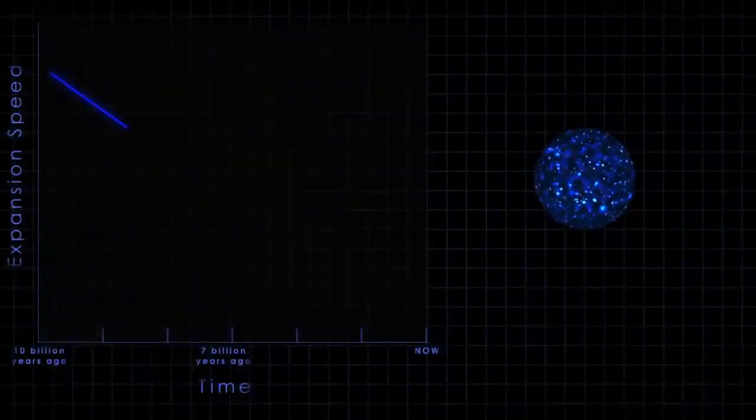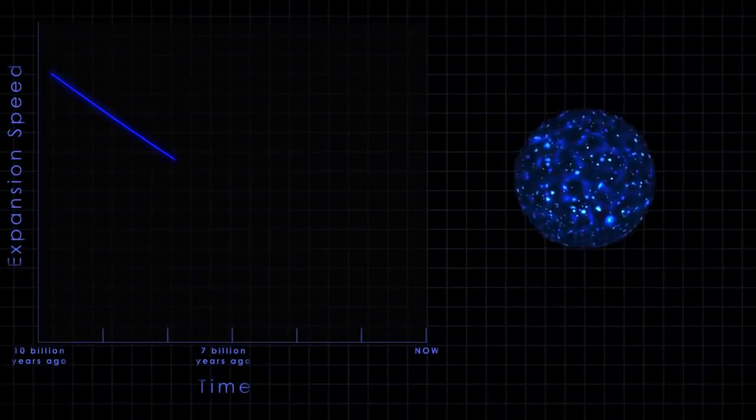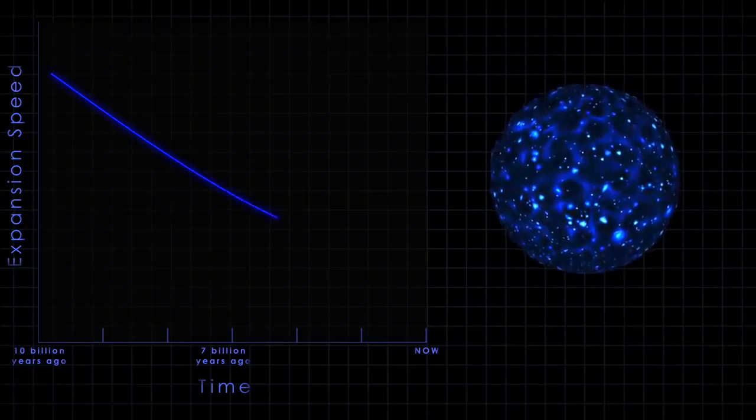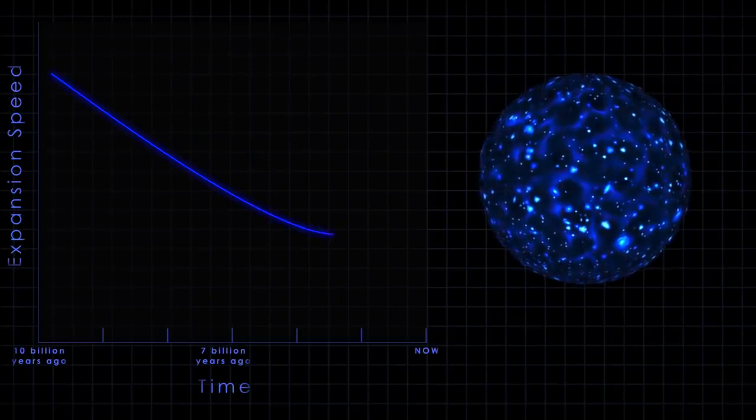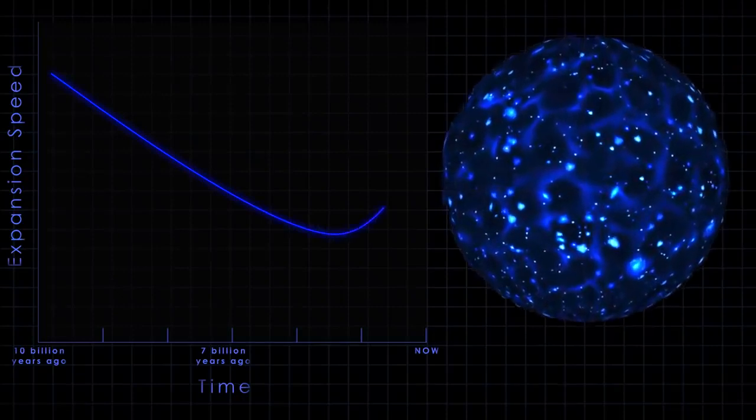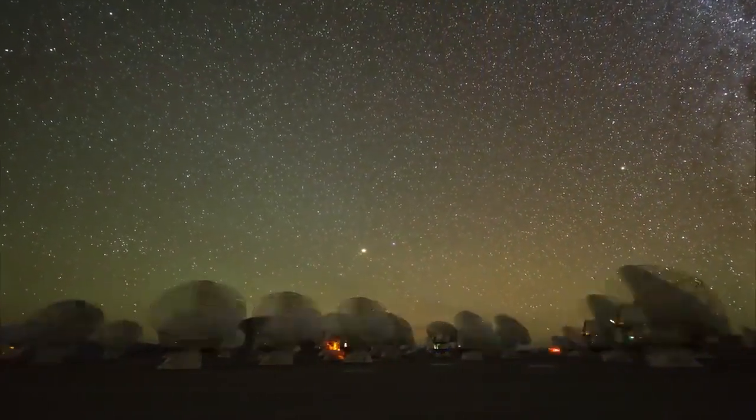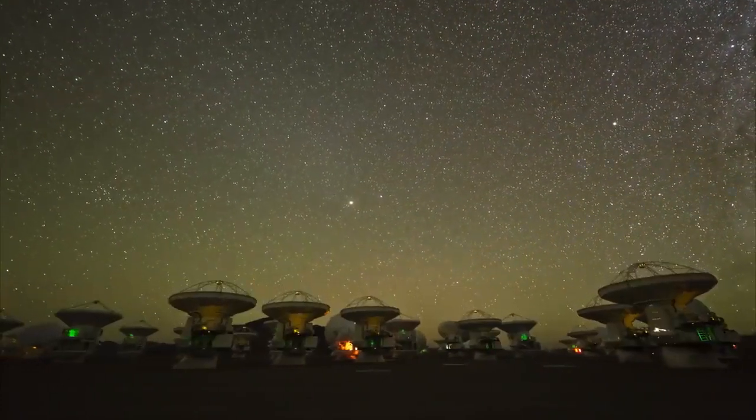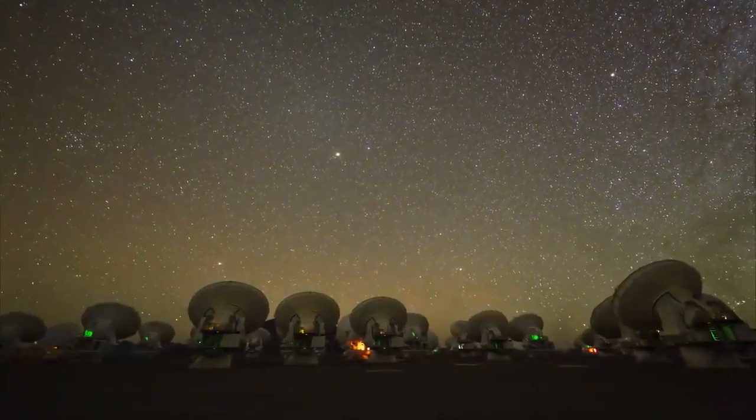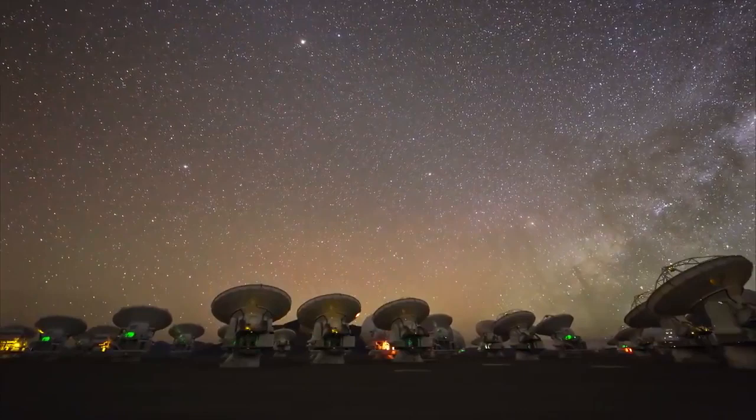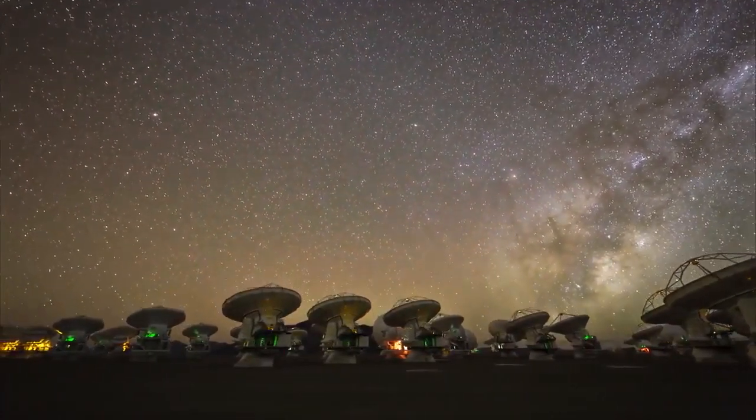This finding led the two teams to conclude that, in the deep past, the universe was slowing down. But, to reach its current size, it must have then sped up. Scientists now believe the universe is dominated not by matter we can see, nor by the mysterious gravitational presence, dark matter. It's something else, pervasive and powerful enough to cause space to accelerate outward. They call it dark energy.